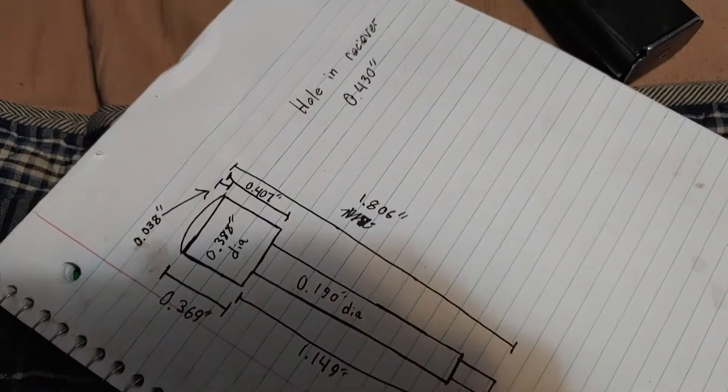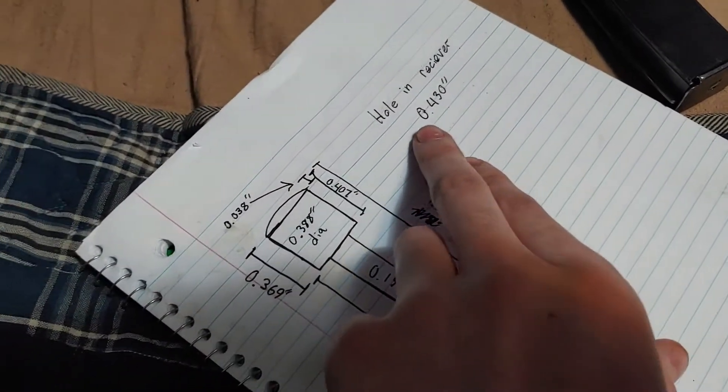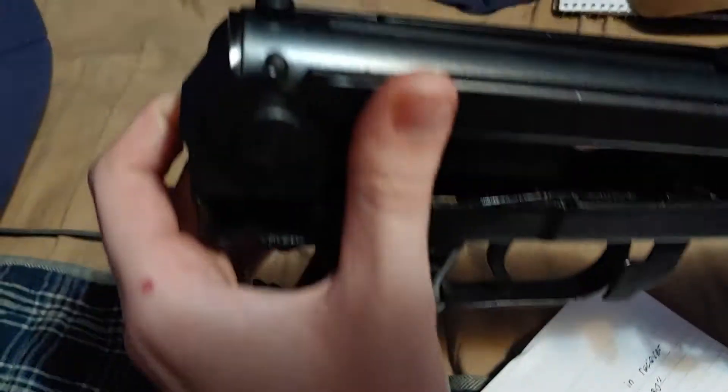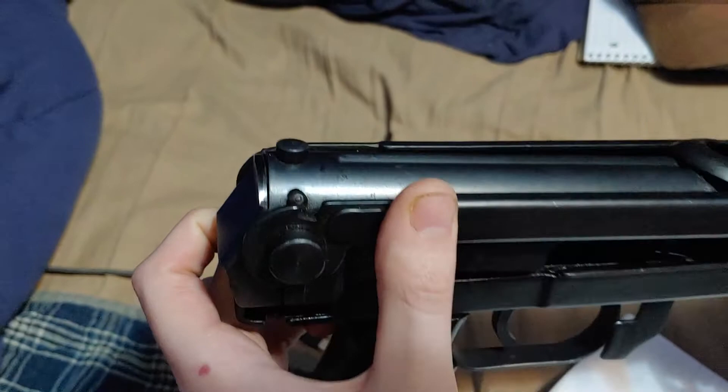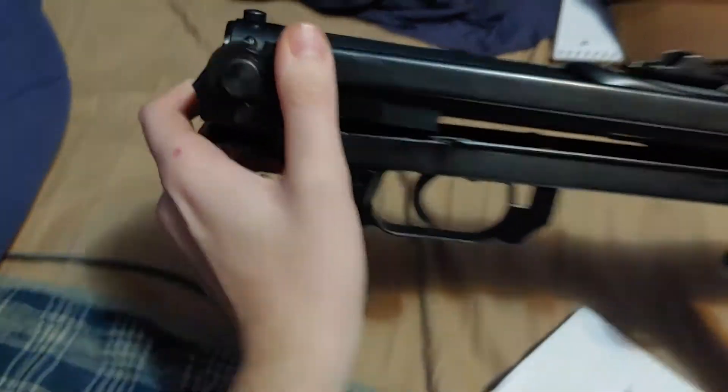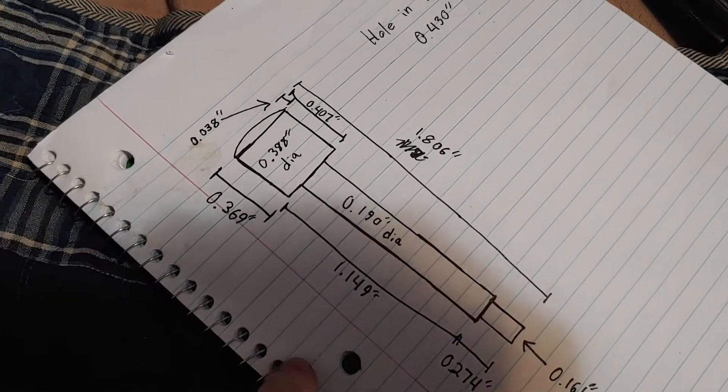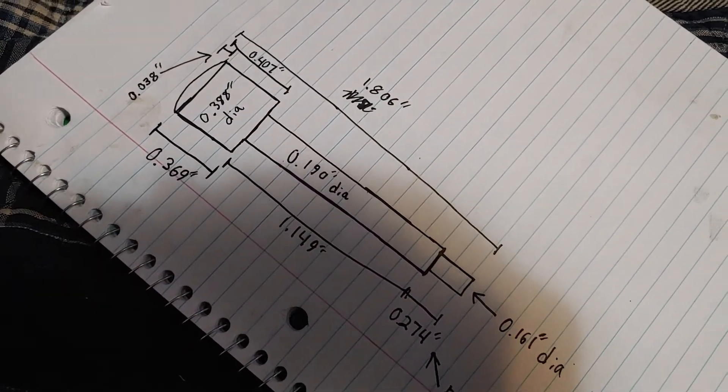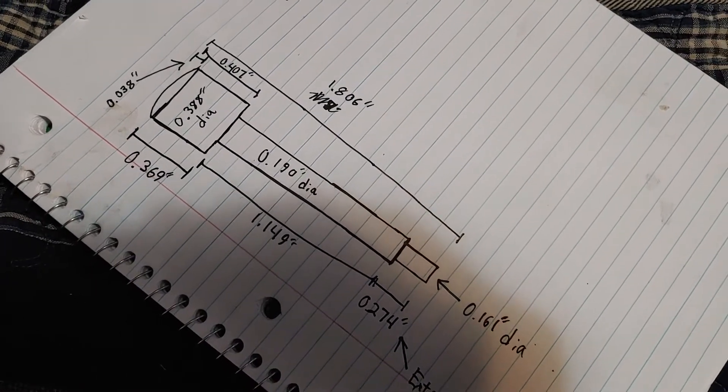So anyway, your hole in your receiver is going to be .430. The actual standard pistol pin is a complete faux pin, so you'll see the hole is tiny. It's like a quarter inch, something like that. And there are your dimensions. So you're smart, you can figure that out.